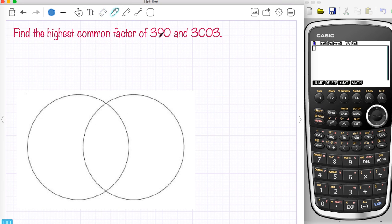So I want to have a look at 390 and 3003, I want to find the highest common factor. Now I've deliberately chosen two quite difficult numbers to find the highest common factor for and I'm going to start off by looking for the prime factors of 390.